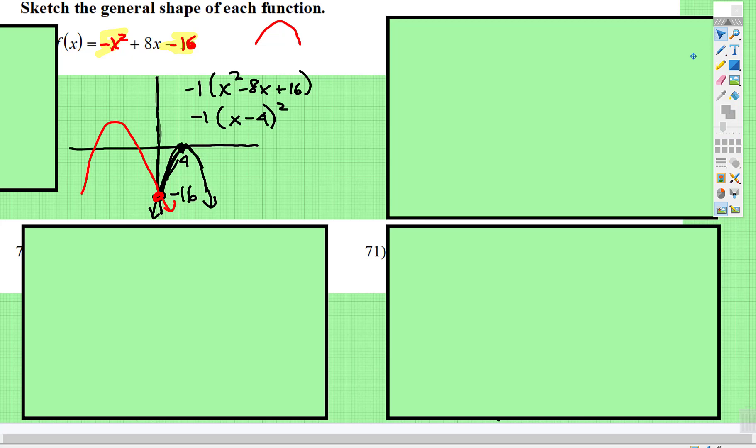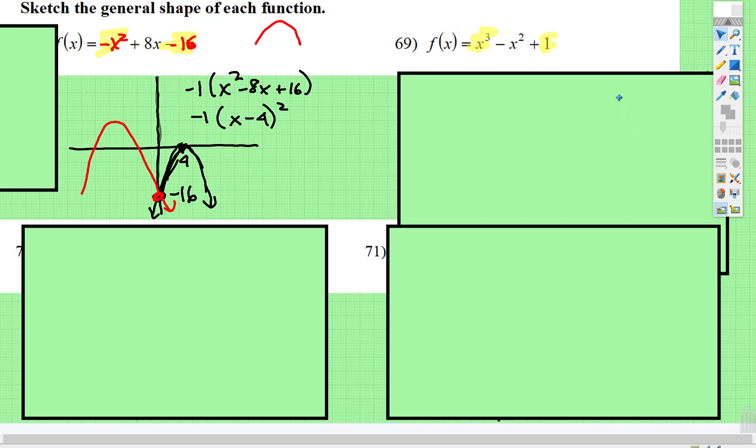But understanding parent graphs is very important. The next one is x cubed, and then it crosses at positive 1 on the y-axis. And so an x cubed looks like this. So that's the general shape.